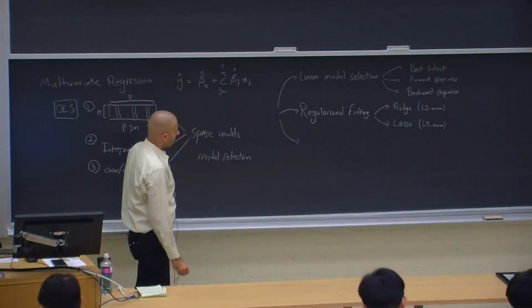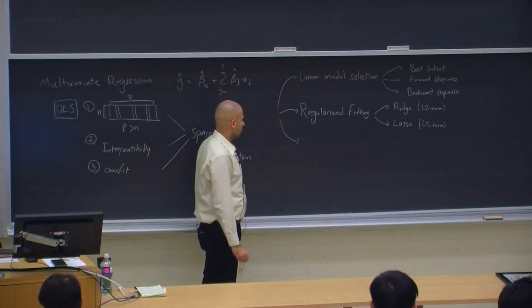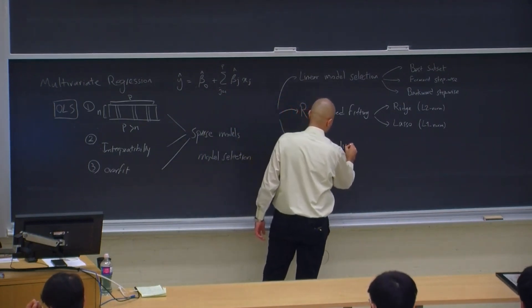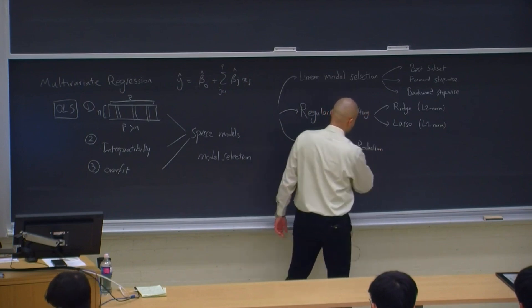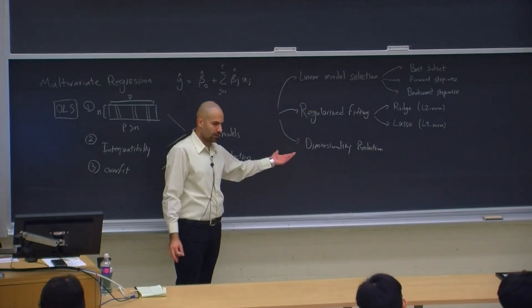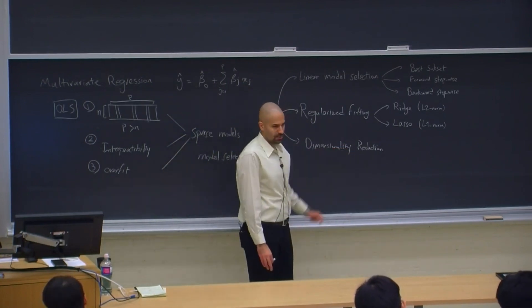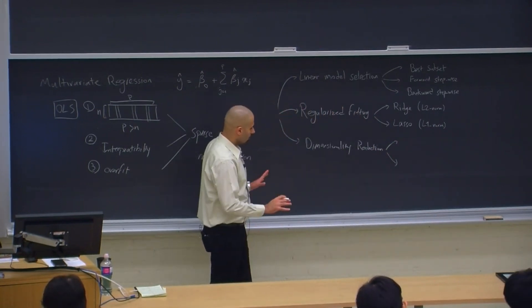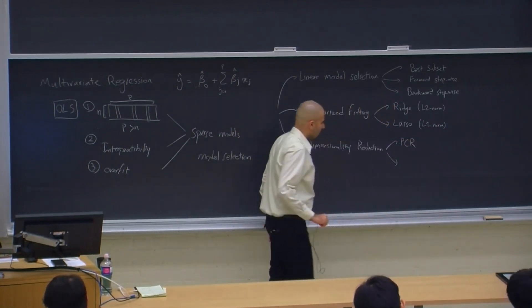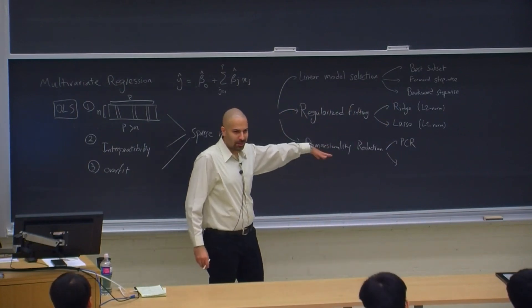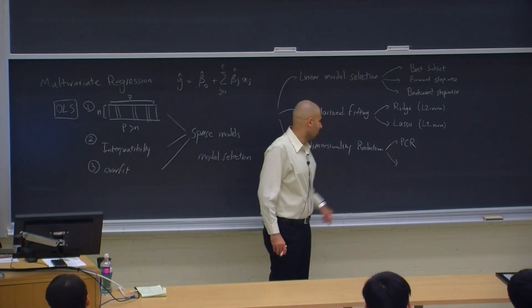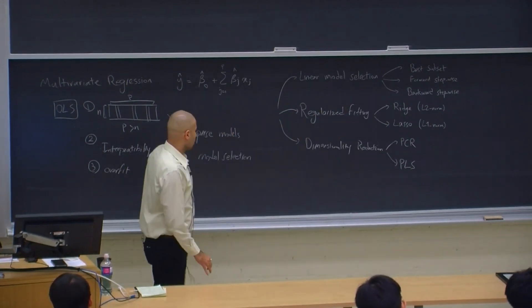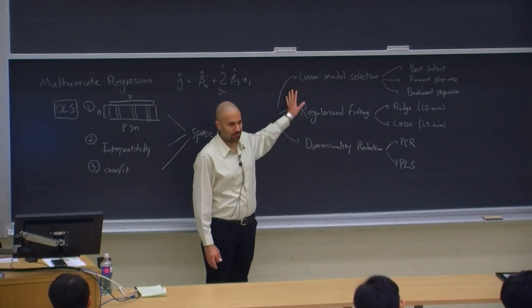A third approach, which is probably not as popular as the previous two, is dimensionality reduction. You may remember this from APS 1070, but we'll cover the basics of principal component analysis regardless. There are essentially two methods: PCR (principal component regression) and PLS (partial least squares). This summarizes the topics we're going to cover today.